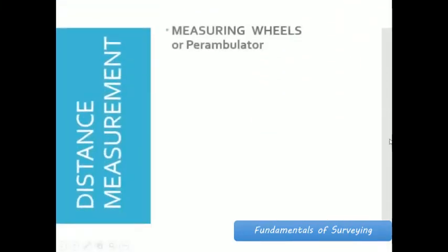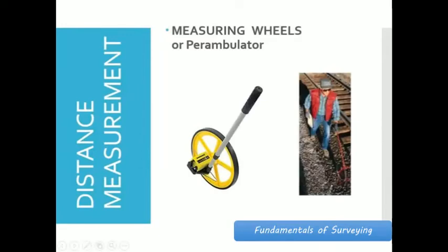The next one is measuring wheels or the perambulator. This instrument can measure distance rapidly, and the distance traversed is automatically registered on the dial. It has the same feature as the odometer of vehicles where the distance traveled is measured. Some surveyors prefer this instrument in marking stations compared to steel tape because it is more comfortable. Para ka lang naglaro na banta sa pagsusukat ng distance using this instrument.